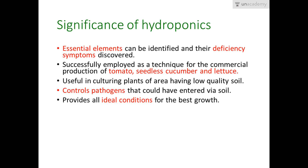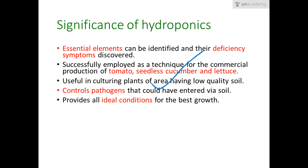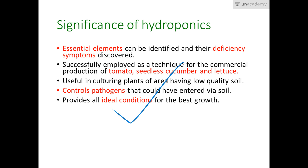The significance of hydroponics: with the help of hydroponics, essential elements can be identified and deficiency symptoms can be discovered. Hydroponics has been employed for the commercial production of tomato, seedless cucumber, and lettuce. It is also useful for culturing plants in areas with low-quality soil where soil cannot support plant life. Since soil causes many pathogen-borne diseases, the hydroponics method controls pathogens that could have entered through soil. Finally, since all basic requirements are calculated and provided to the plant, it gives the ideal conditions for best plant growth.